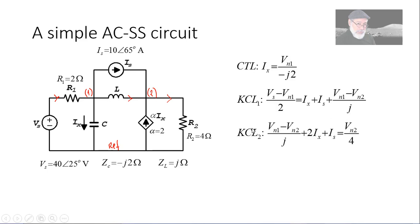KCL2, currents going in 2. The one on the top, Is. The one on the bottom, 2 times Ix. And there's a third one, V1 minus V2 divided by J, the impedance of the inductor. And that is equal to the only one solitary current leaving O2, which is V2 divided by 4 ohms.